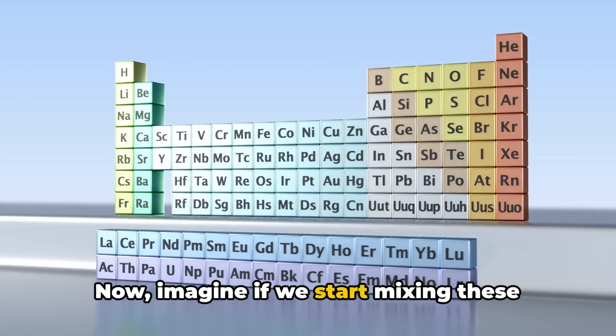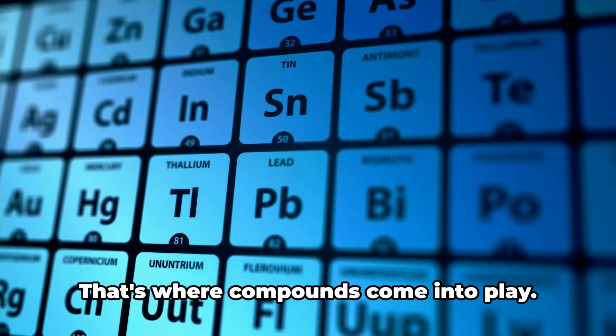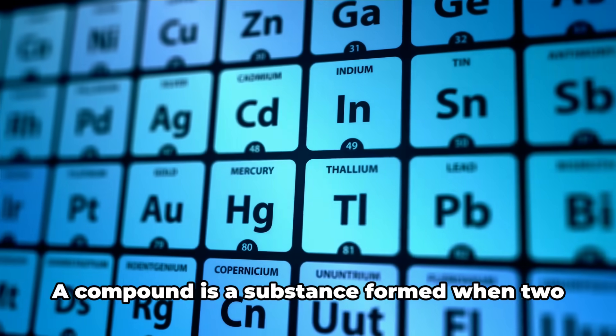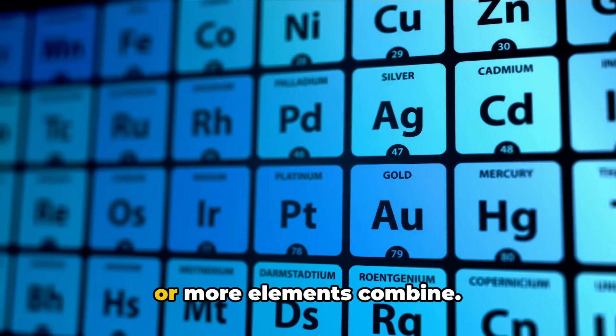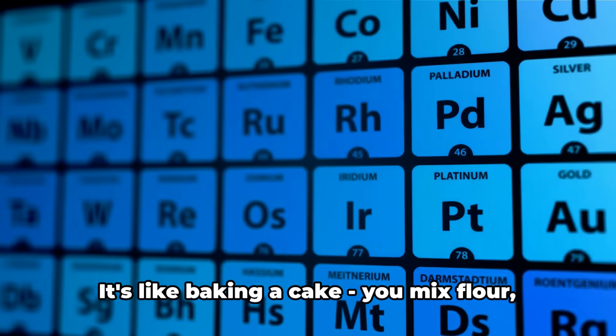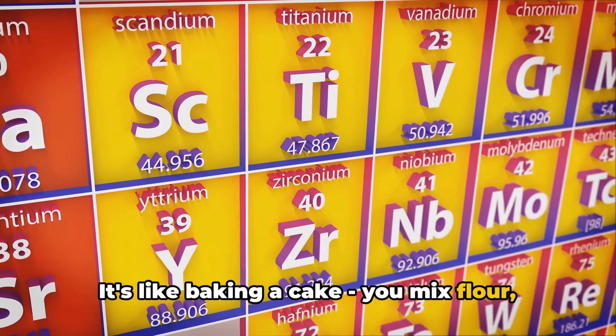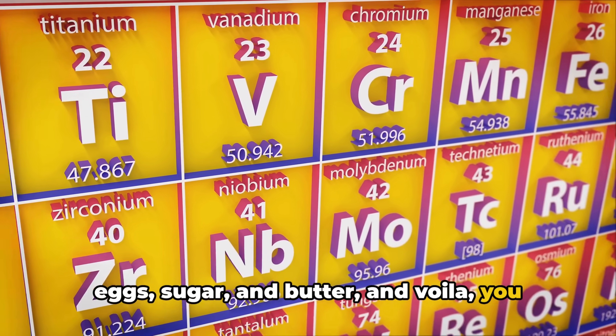Now, imagine if we start mixing these elements together in different ways. That's where compounds come into play. A compound is a substance formed when two or more elements combine. It's like baking a cake. You mix flour, eggs, sugar, and butter, and voila, you get a cake.